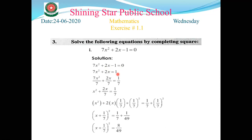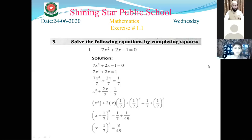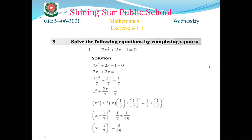The next step in the completing square method is to make the coefficient of x² equal to 1. Since the coefficient of x² is 7, we divide both sides by 7. So 7 and 7 cancel, giving x² + (2/7)x = 1/7.